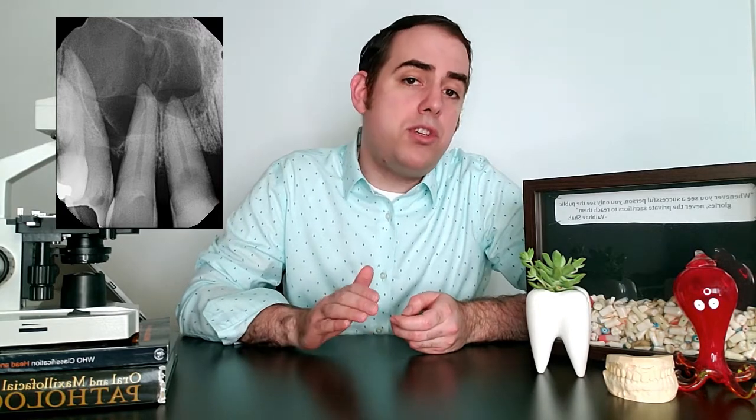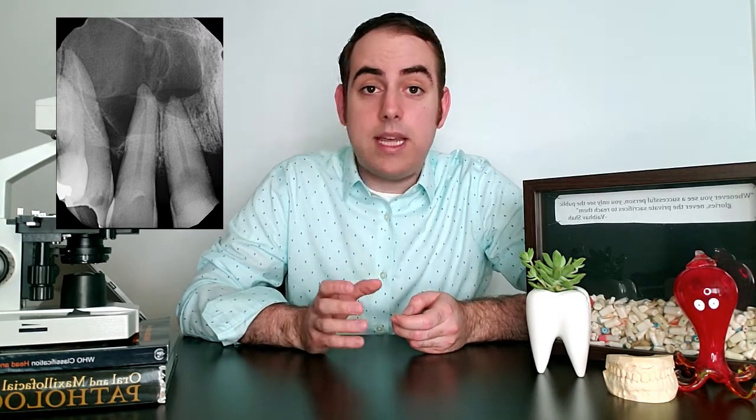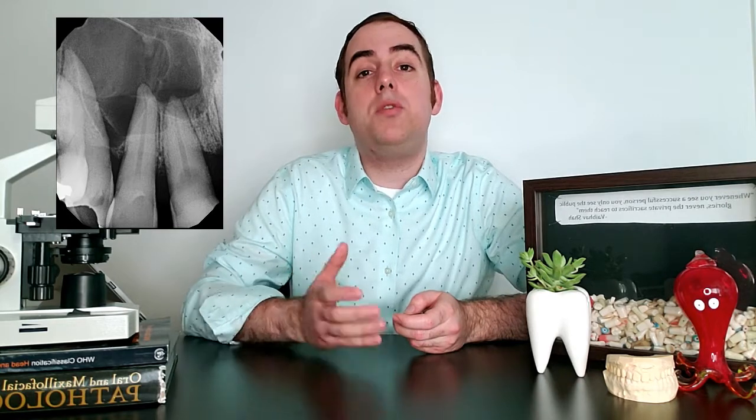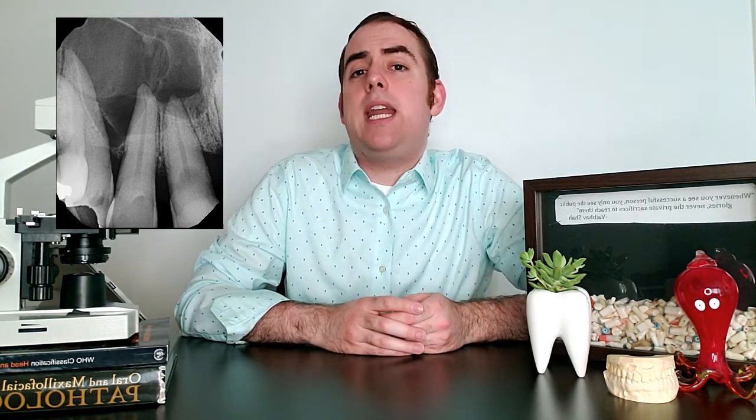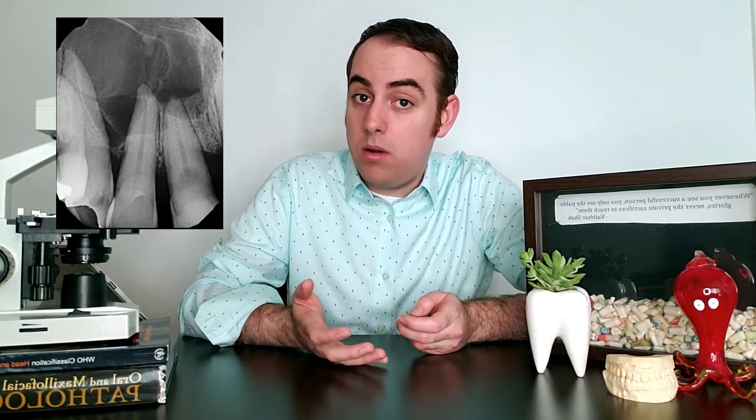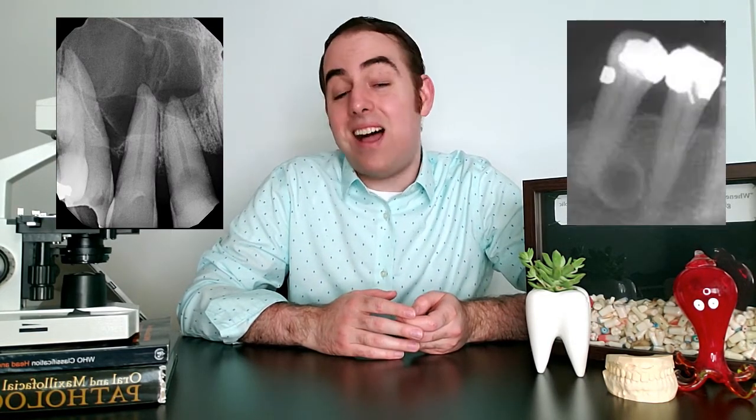It's important to note that the foramen — the opening between the tooth and the outside bone — is not always at the tip of the root. Sometimes it's on the lateral root surface, called a lateral root canal. This means the periapical granuloma can form at the apex most commonly, but can sometimes form on the side of the tooth in a lateral position.